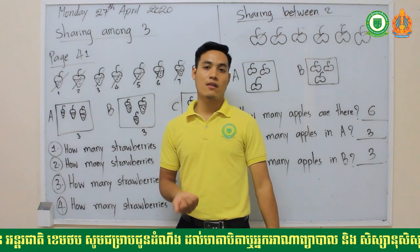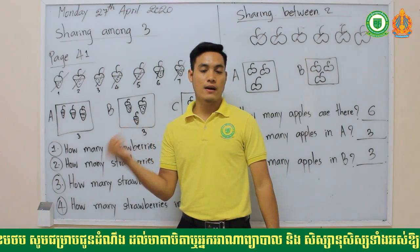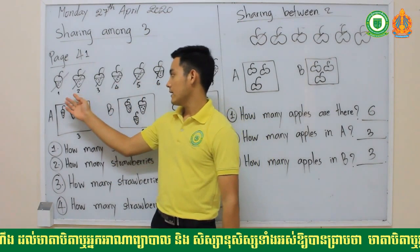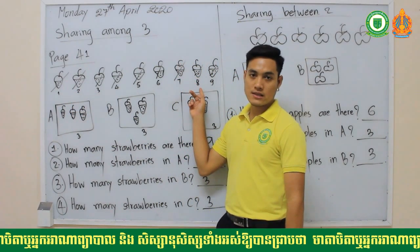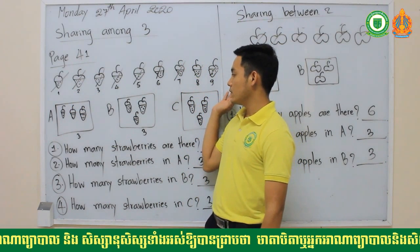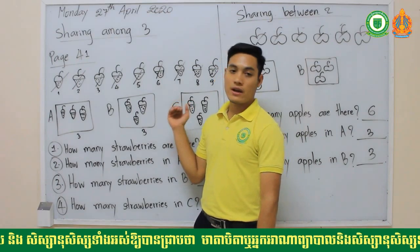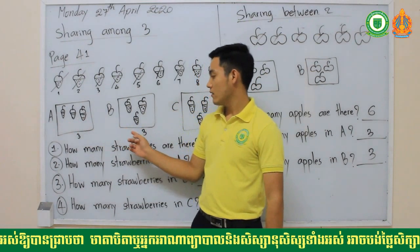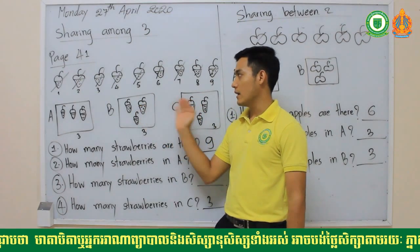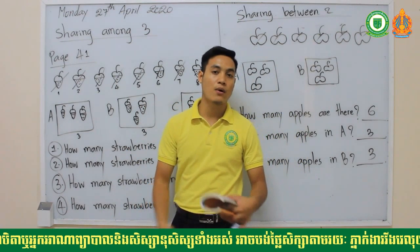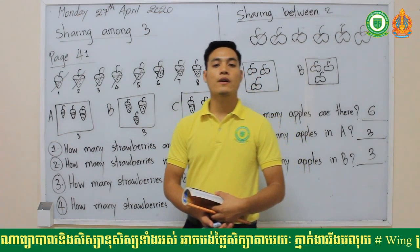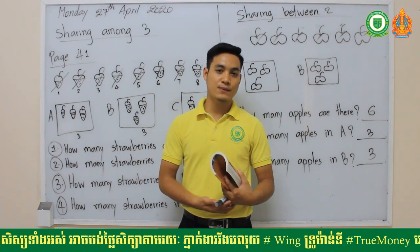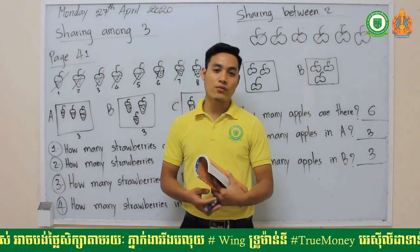For example, there are nine strawberries and you share among three people. After sharing among three, each one gets three — three, three, and three. That's what you have learned so far: sharing between two and sharing among three.